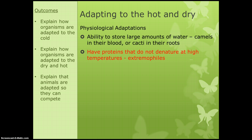Some physiological adaptations are having the ability to store large amounts of water. Camels store lots of water in their blood and cacti store water in their roots — this is a physiological adaptation; they are built to store that large amount of water. For the higher paper, there are creatures called extremophiles that have proteins which do not denature at high temperatures. Denature means the protein changes shape so it can't do its job. Extremophiles have proteins that need much, much higher than normal temperatures before they denature.